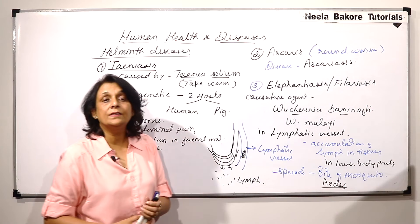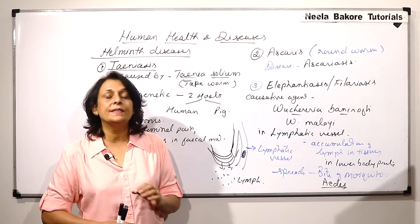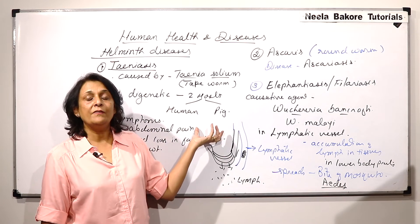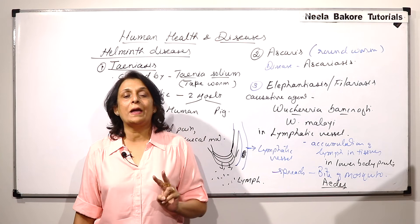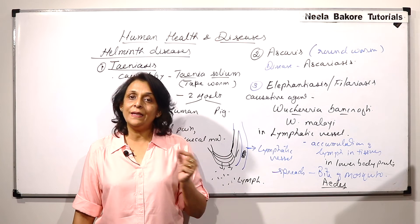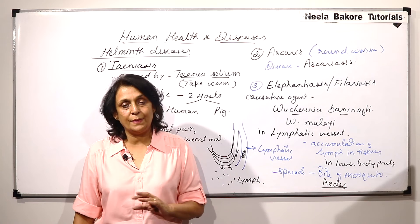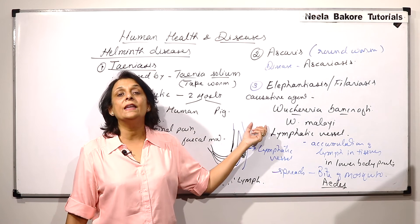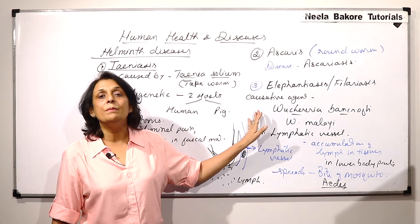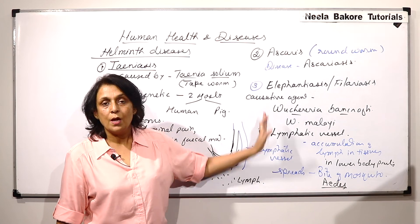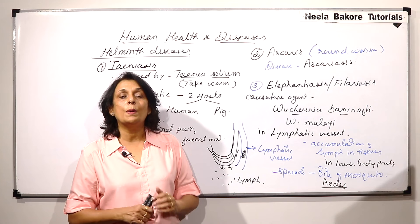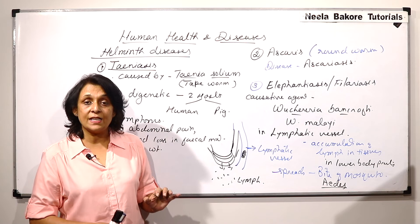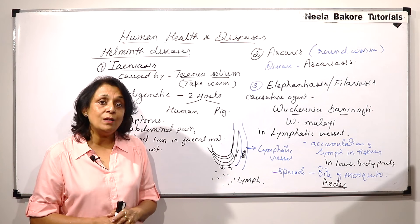So, these are three important helminths. There are many more but we have to talk about few important ones. So, when we use the word helminth, we are talking about two phylums together. Platyhelminth and Aschelminth or platy and nematohelminth. Tapeworm is in platyhelminth and Ascaris and Wuchereria, they are in nematohelminth. So, they can be termed as nematodes. But together, when we talk about all these worms, they are placed or they are termed as helminths. And the diseases which are caused, are called the helminth diseases.